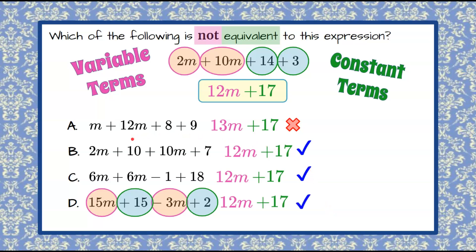So now we can be sure that our answer choice here that is not equivalent is choice A.